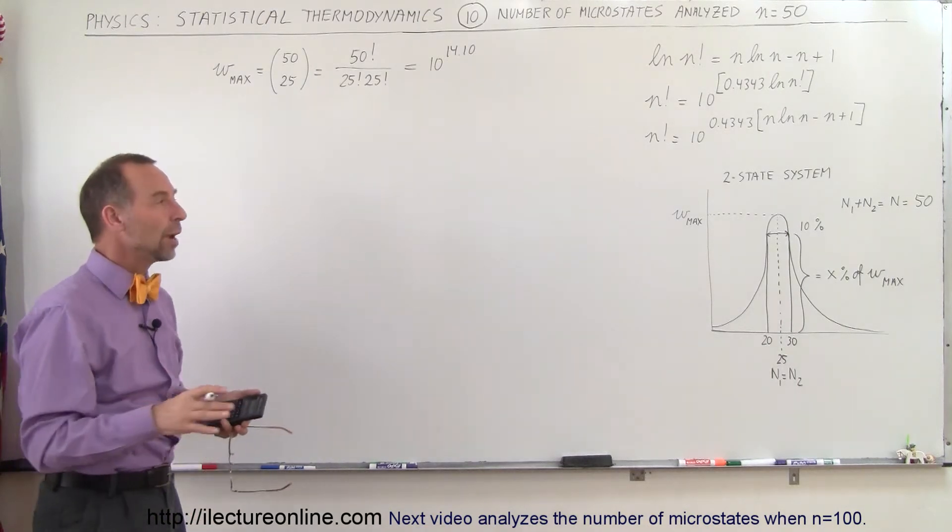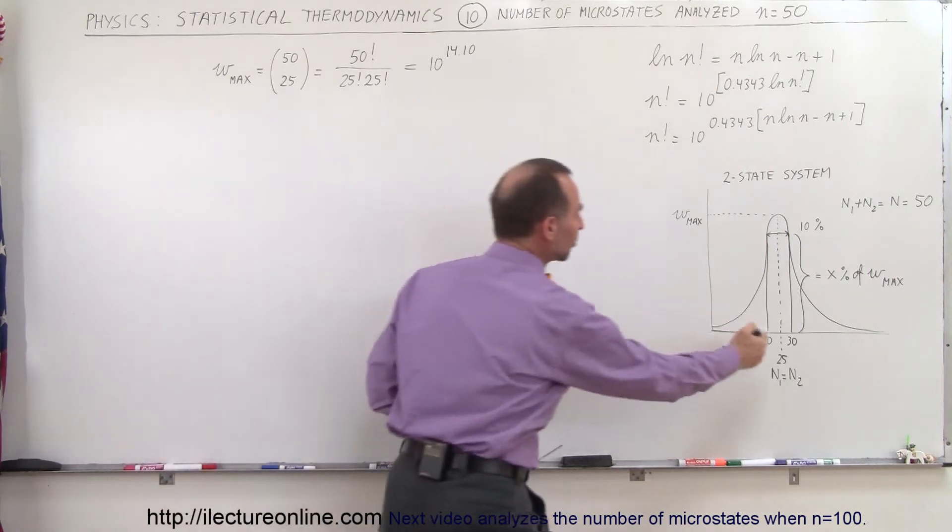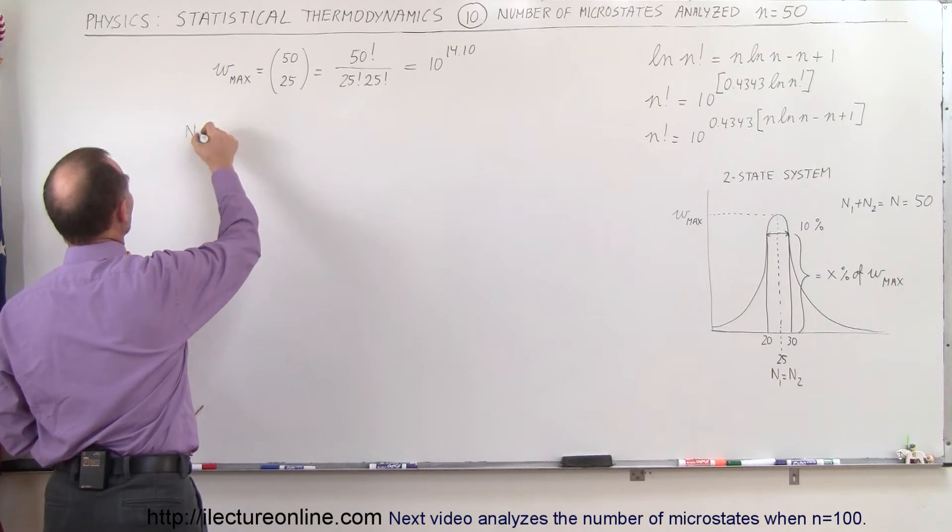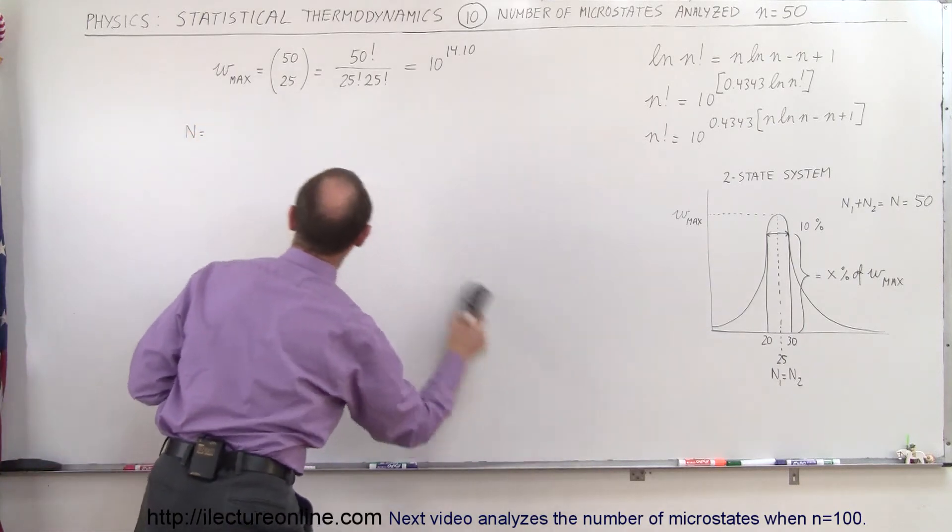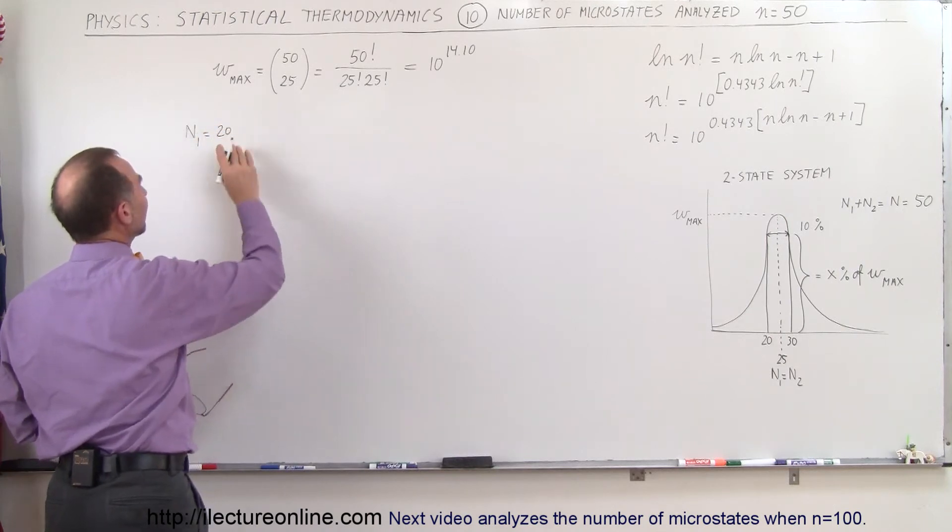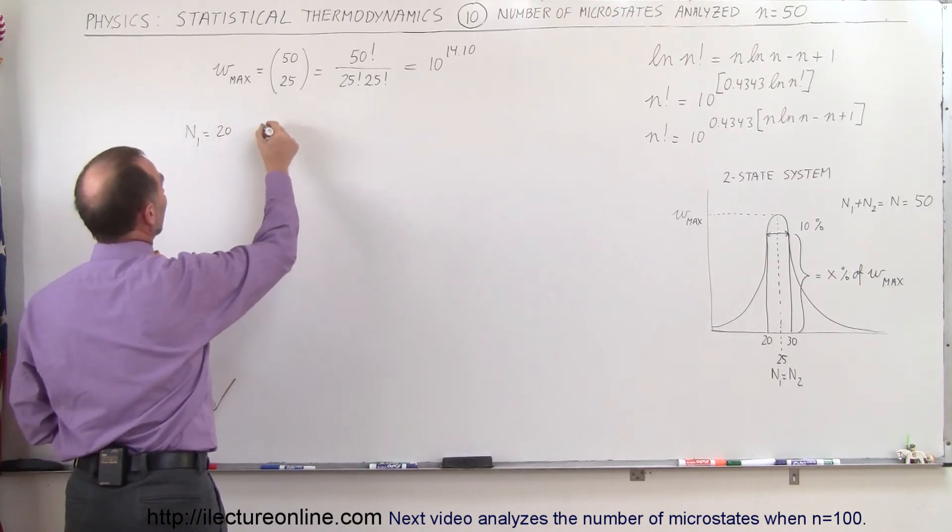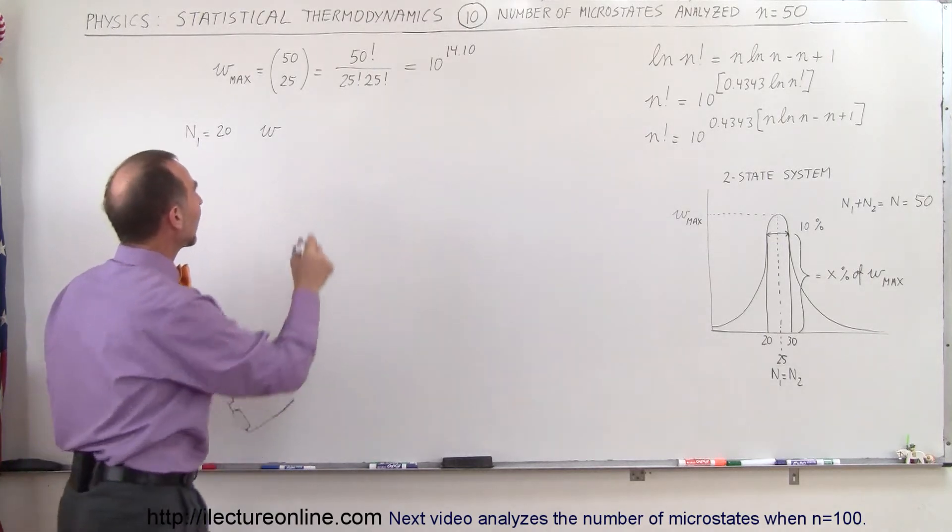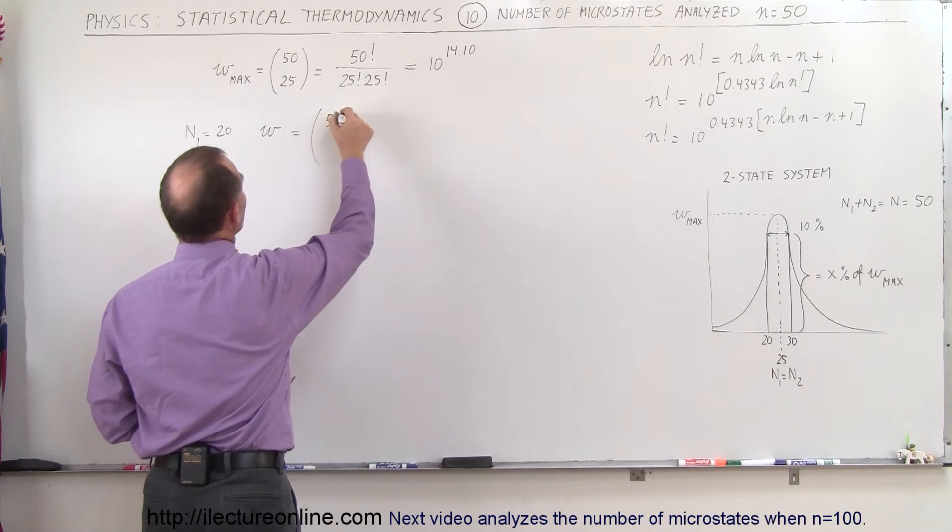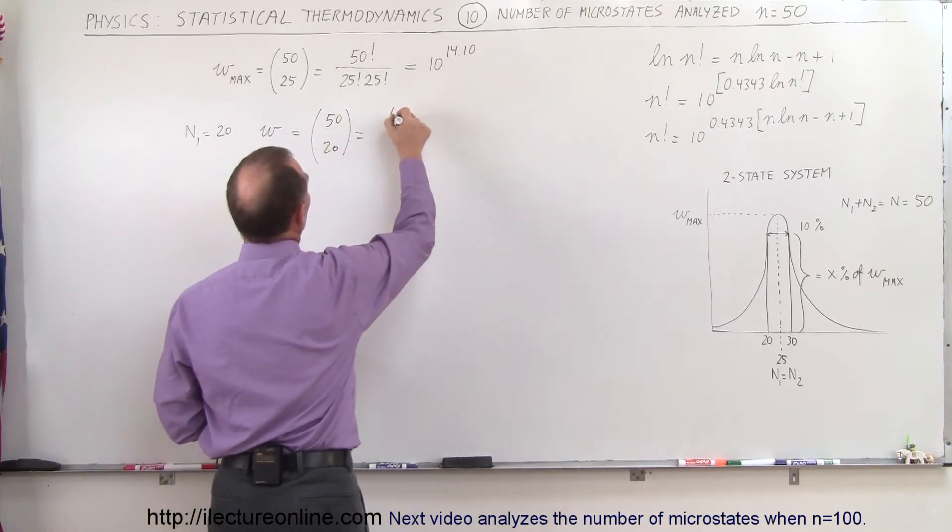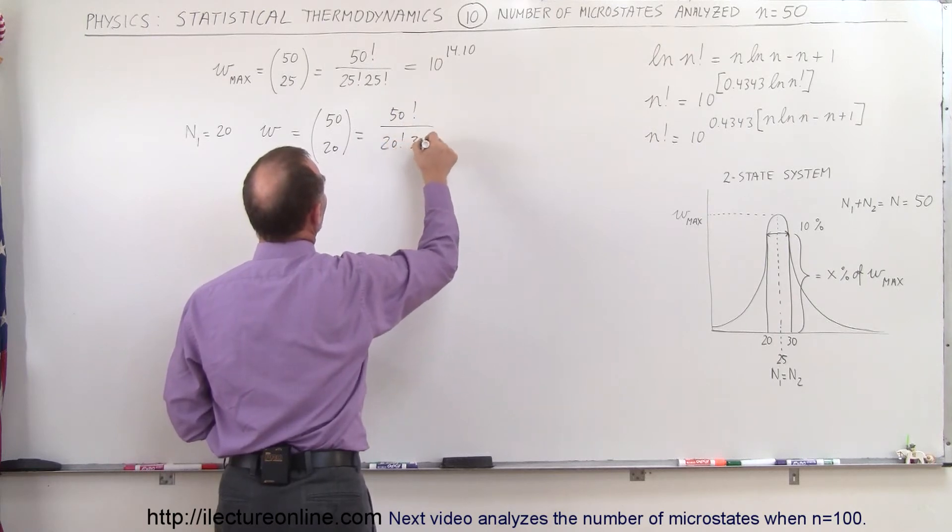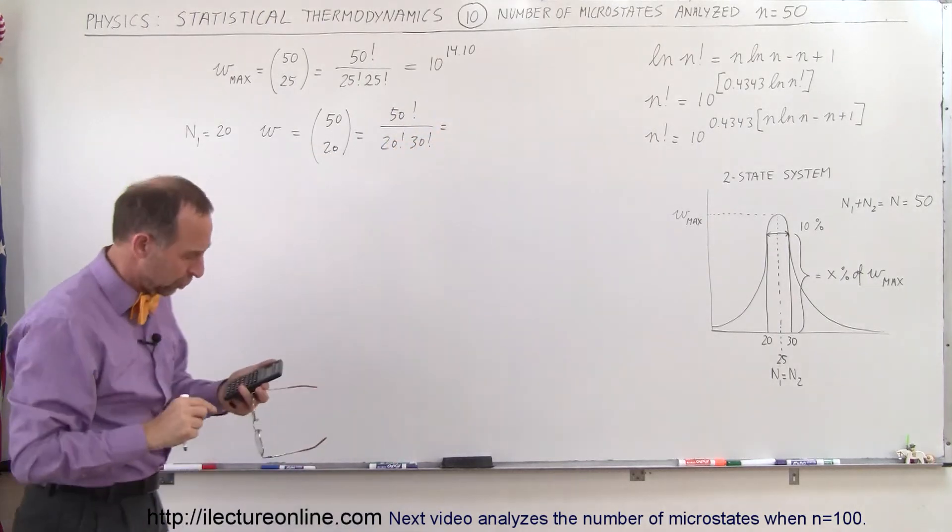Now let's see what it would be when we're 10% off the maximum. What would be the relative height of that curve right there? So we're going to go n1 is equal to 20 instead of 25. And so now we want to calculate the number of microstates in that case. And so that's going to be equal to 50,20, which can be written as 50 factorial divided by 20 factorial divided by 30 factorial. And let's see what that is equal to.